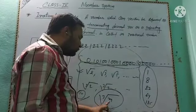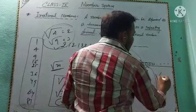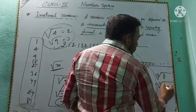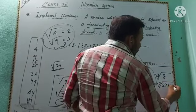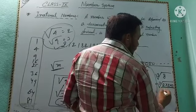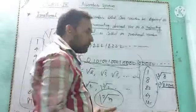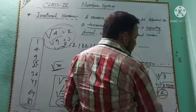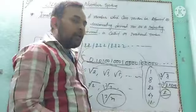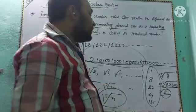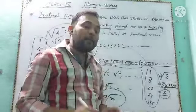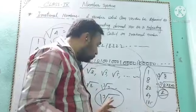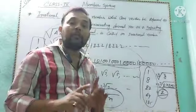For example, the cube root of 8 — since 8 = 2×2×2, it is a perfect cube, so ∛8 = 2, which is a rational number. But if M is not a perfect cube, then ∛M is an irrational number.